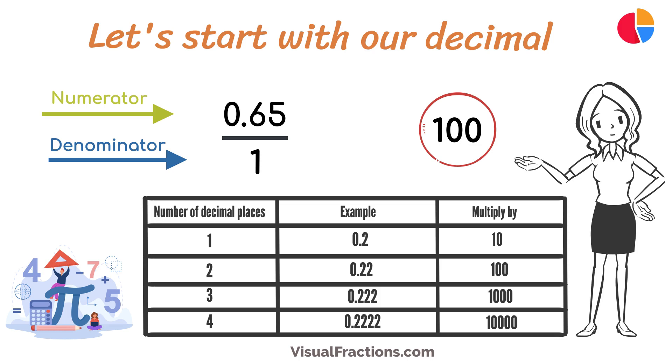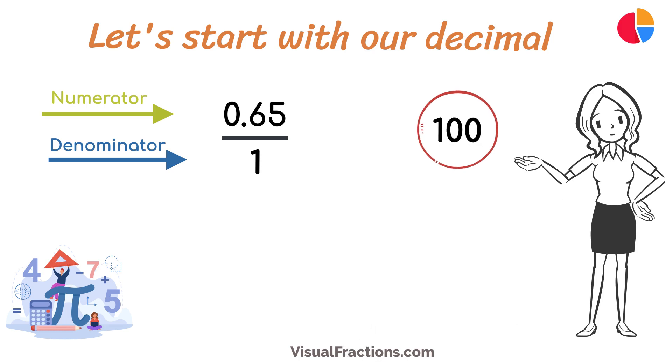This sets up the conversion process where we multiply both the numerator, the decimal, and the denominator, 1, by 100 because there are two decimal places. So, 0.65 times 100 gives us 65, and 1 times 100 gives us 100.